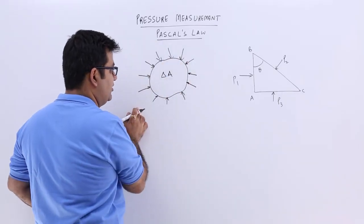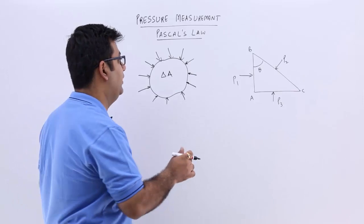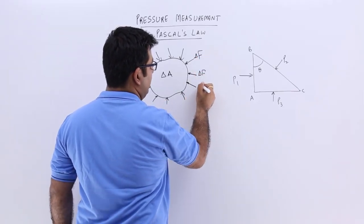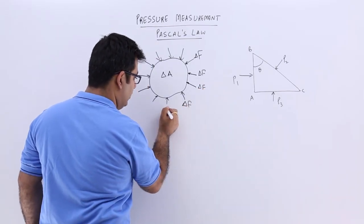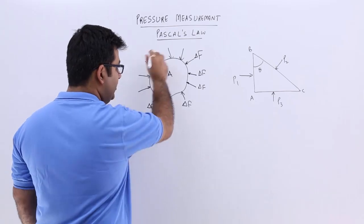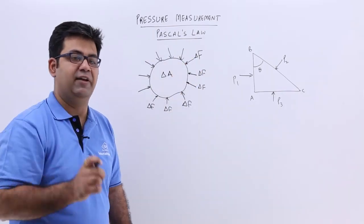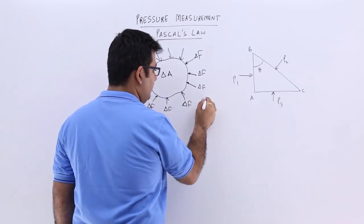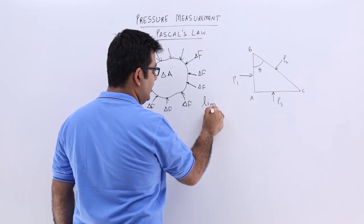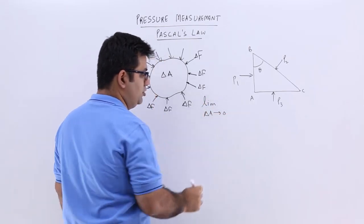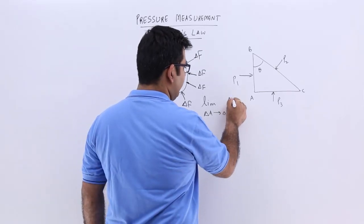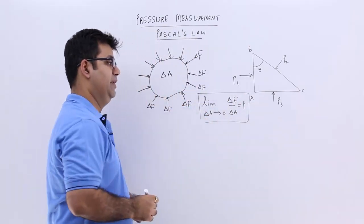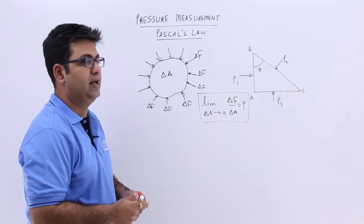This force being exerted from all the sides is always perpendicular. These are delta F on all sides — small elementary force elements that sum up to create the entire force on this element. If you take the ratio between this force and this area, and the area tends to 0, then delta F upon delta A is known as the pressure on this fluid element.